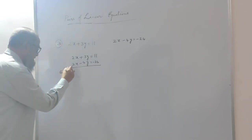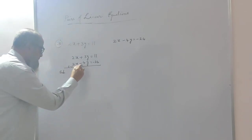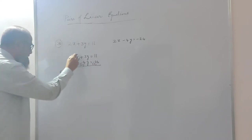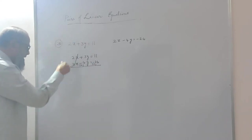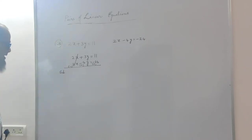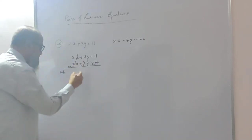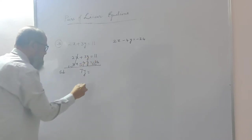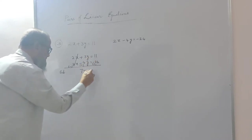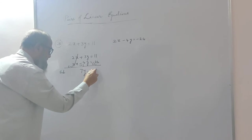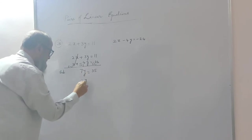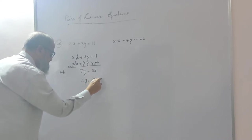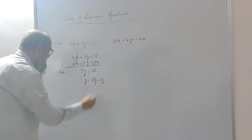When I subtract, the second equation changes signs: 2x minus 2x gets cancelled. 3y plus 4y gives 7y. 11 plus 24 gives 35. Therefore y will be equal to 35 by 7, so I get 5. The value of y is 5.